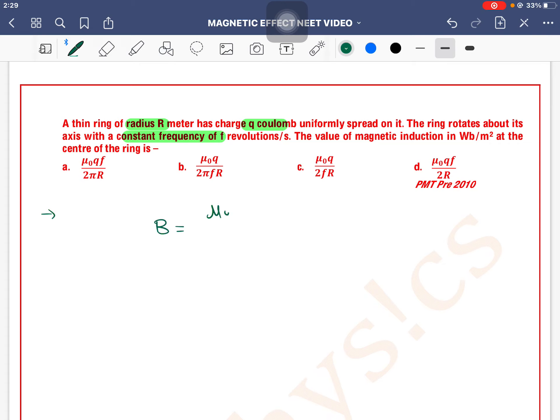Formula is μ₀I divided by 2πR, right? And current, current charge upon time, I is equal to charge Q and 1 by T. Frequency here, put this, B is equal to μ₀Qf divided by 2πR. So B is μ₀Qf divided by 2πR, option...